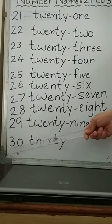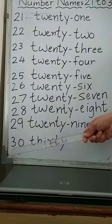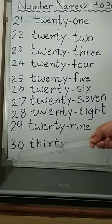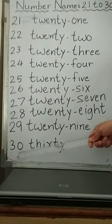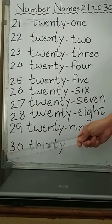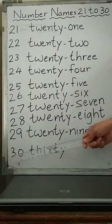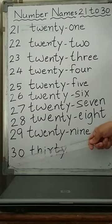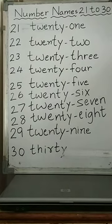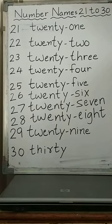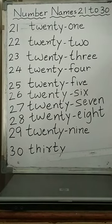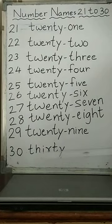And after 29, next number is 30. Here, 0 is at 1's place and 3 is at 10's place. So the number name for this numeral 3-0 is 30. The spelling of 30 is T-H-I-R-T-Y. 30.